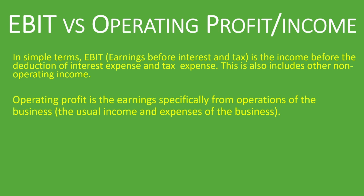Operating profit, on the other hand, is the earnings specifically from operations of the business. By operations of the business, we mean the usual income and expenses of the business. We'll look at examples to show you how this looks in the income statement or the statement of comprehensive income. So EBIT is just before you deduct your interest expense and tax expense, while operating profit covers only income and expenses from operations.